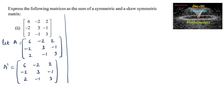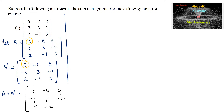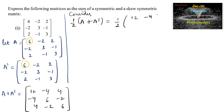So A plus A transpose, adding the corresponding elements: 6+6=12, -2+(-2)=-4, 2+2=4; -2+(-2)=-4, 3+3=6, -1+(-1)=-2; 2+2=4, -1+(-1)=-2, 3+3=6. So 1/2 times of A plus A transpose equals 1/2 of [12,-4,4; -4,6,-2; 4,-2,6].